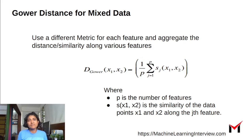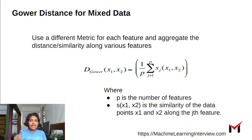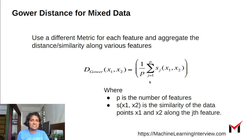There are a bunch of ways to deal with mixed data, but Gower distance is one of them. The idea is to use a different metric for each feature, and then aggregate the distances along various features to come up with an overall distance between two data points. So this is a simple formula: if P is the number of features, you just average the feature-wise distance, which we are calling S_J(X1, X2). Note that some people use similarity and some use distance, but we will go with distance here.